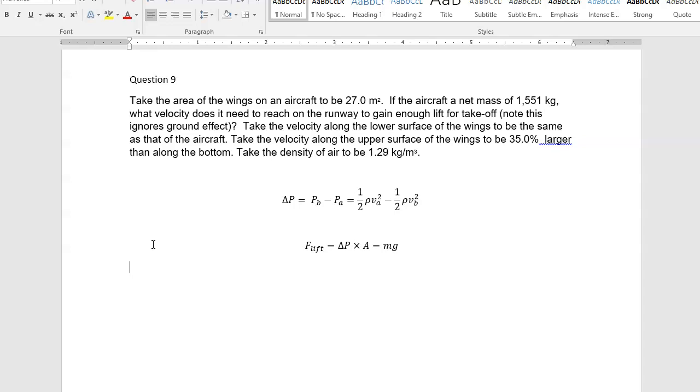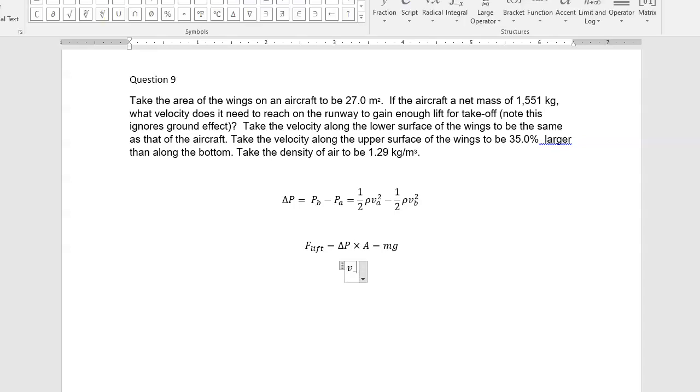And I say, take the velocity along the lower surface, VB, to be the same as that of the aircraft. So if VB is the aircraft velocity, VA is 1.35 times VB because we've got 35% here.